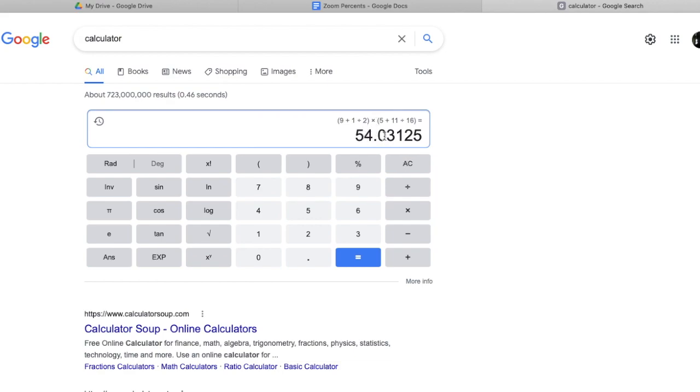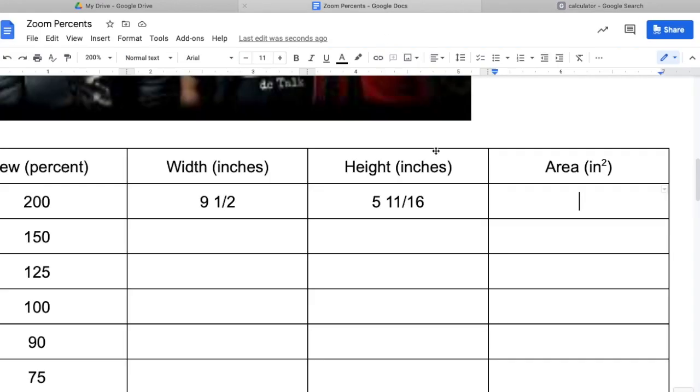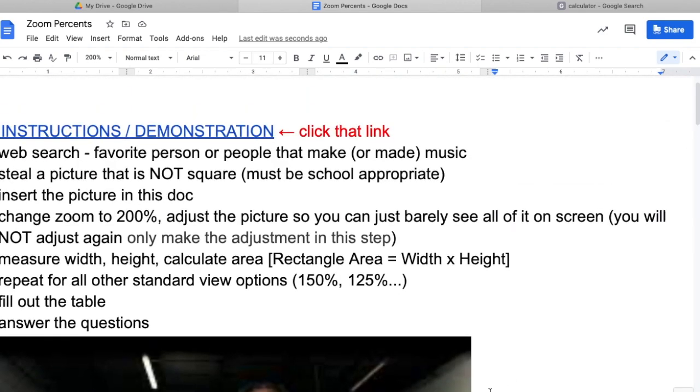Without doing my conversions, this is going to give me a decimal answer. I'm fine with you leaving it as a decimal. 54.0 is my area for this particular instance.